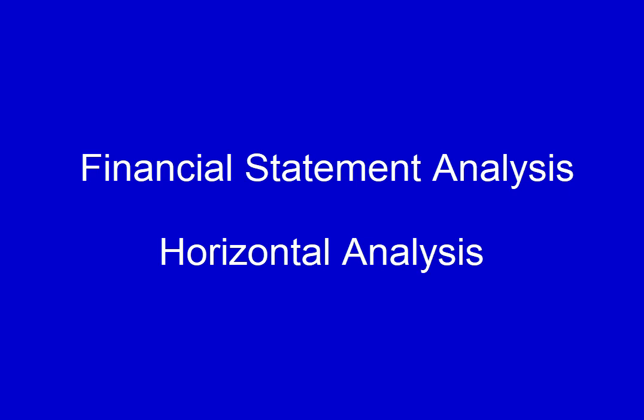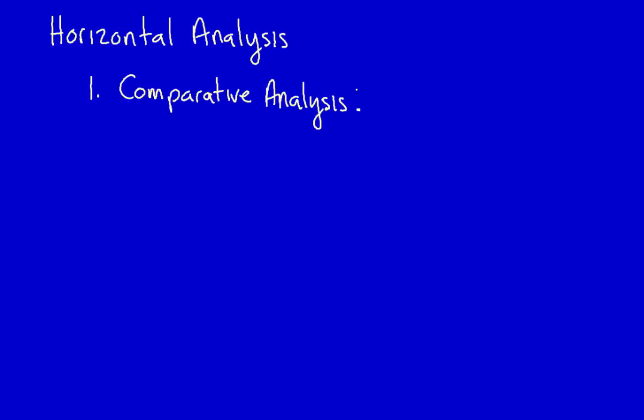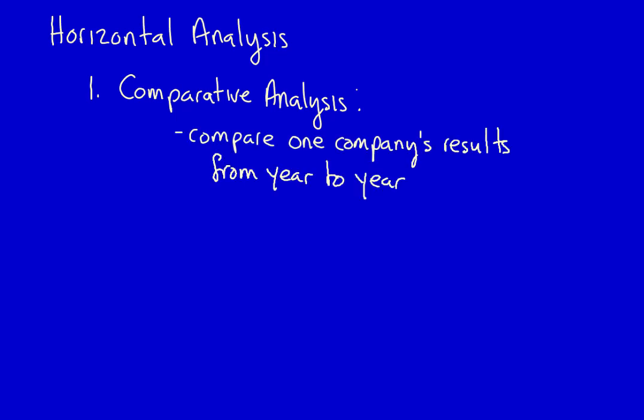We're back to discuss horizontal analysis. There are two types of horizontal analysis. The first is called comparative analysis, where we compare financial statement balances from one year to the next within a single company. The second is trend analysis, where we compare all the years against a single base year.